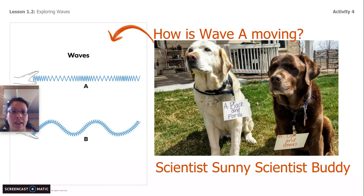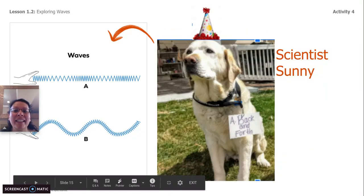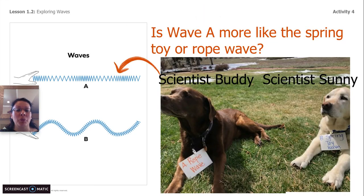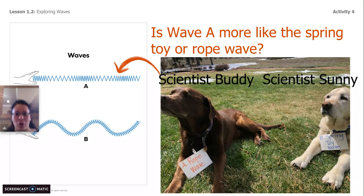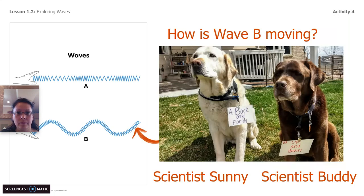If I were to draw out those waves, this is what wave A would look like — there's motion there. Wave B is doing a different kind of motion. How is wave A moving? Scientist Sunny said wave A is moving back and forth, but Scientist Buddy is saying wave A is moving up and down. Scientist Sunny is correct — wave A is moving back and forth, back and forth. So is wave A more like the spring toy or the rope wave? It's the spring toy. Wave A goes back and forth just like the spring was.